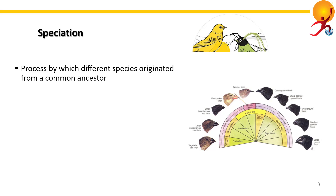By means of genetic variability like mutation and recombination, and natural selection, they look different from each other. Speciation is considered to have occurred when they reach a point where cross-breeding between these two groups becomes impossible.